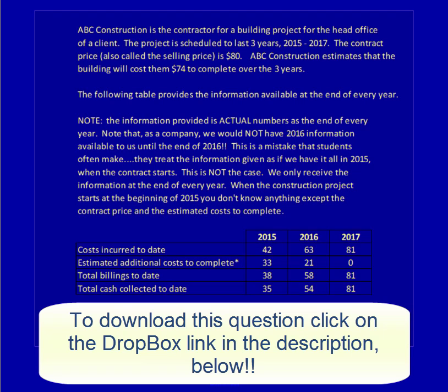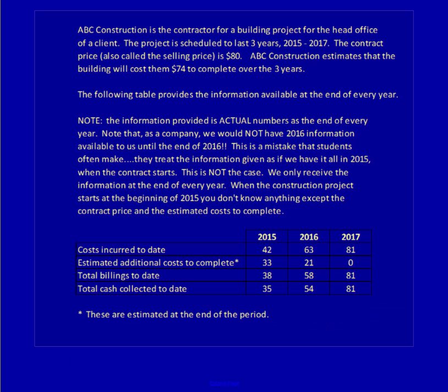We're going to be working with ABC Construction. They're a contractor and they're building a building for a client — it's going to be their head office. The project is scheduled to last for three years: 2015, 16, and 17. The contract price, also called the selling price, is $80. ABC Construction is estimating that the building will cost them $74. I've got a table here that shows costs incurred to date, estimated additional costs, total billing to date, and total cash collected to date for 2015, 16, and 17.